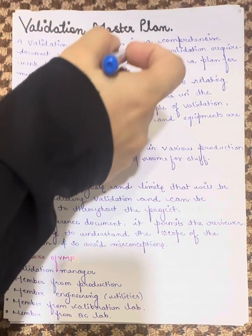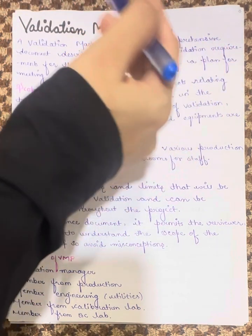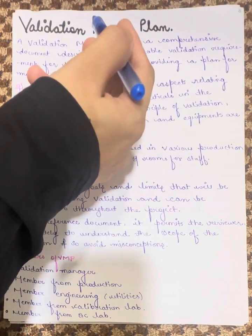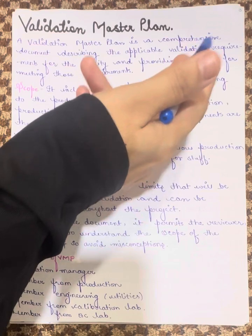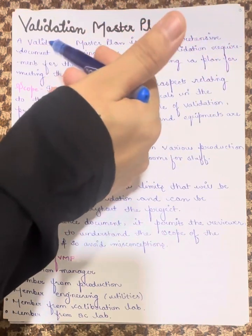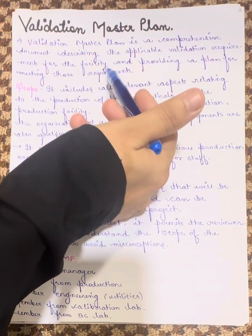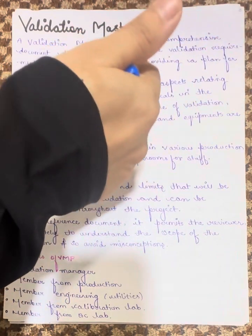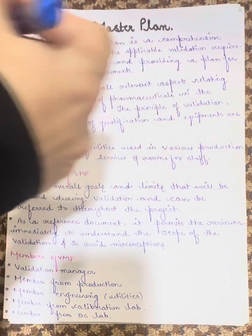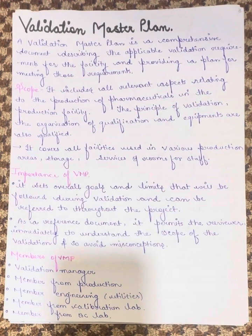Validation Master Plan is a comprehensive document describing the applicable validation requirements for the facility and providing a plan for meeting those requirements. So, Validation Master Plan is a document which describes where applicable and what the validation requirements are for the facility.